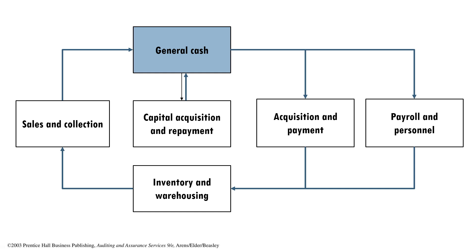Notice the very unique placement of the inventory and warehousing cycle — it doesn't have any direct interaction or direct relation to cash, as it has to wait for materials and labor to come in before we can start converting raw materials into finished goods. Notice as well that all of these cycles have common accounts. For capital acquisition, we talk about long-term debt, equity, and cash. For acquisition and payment, we talk about accounts payable, accrued liabilities, purchases, cash, and even the purchase of non-current assets like PPE.